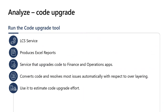Now let's talk about the code upgrade tool, where most of the estimation efforts need to be focused. The code upgrade tool is an LCS service — you feed it your AX 2012 model store and it produces Excel reports analyzing your customizations. It also upgrades the code to Finance and Operations apps format. To be clear, it doesn't necessarily convert overlays to extensions yet, but it upgrades the code into the Finance and Operations format, and the remaining work is to convert those overlays to extensions. It does resolve some conflicts and provides a report for developers to pick up the work.